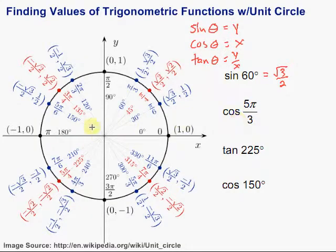Cosine of 5π over 3. Well, let's find 5π over 3. There it is, 300 degrees. The cosine is the x coordinate. So we look—remember, x, y—there's our x, one-half. So the cosine of 5π over 3 is equal to just one-half.